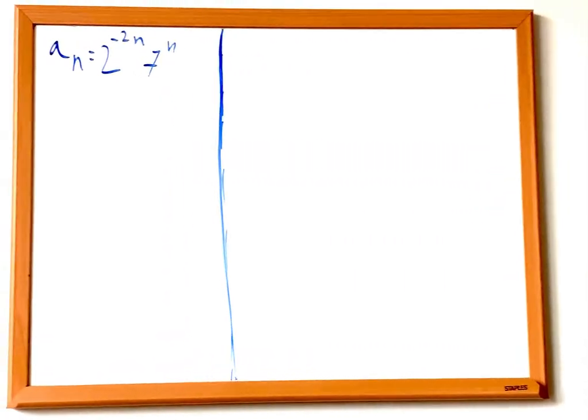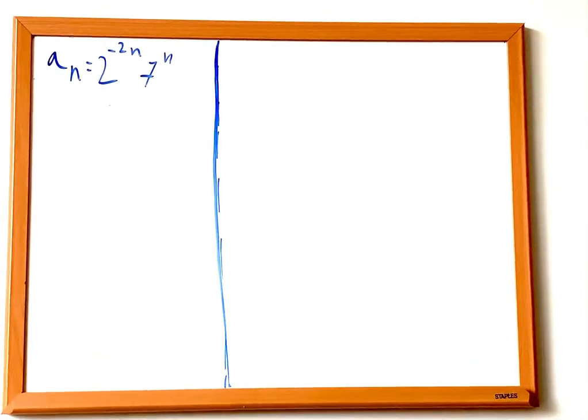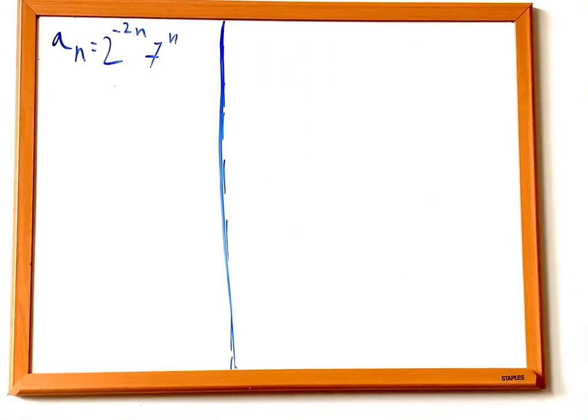So we have the sequence a sub n is equal to 2 to the power of negative 2n times 7 to the power of n.